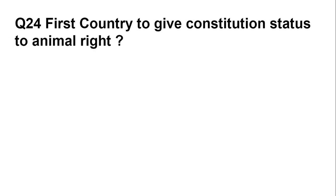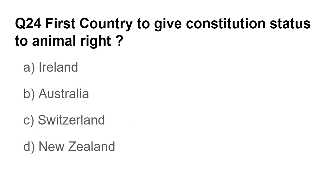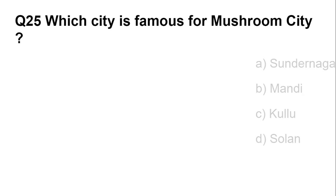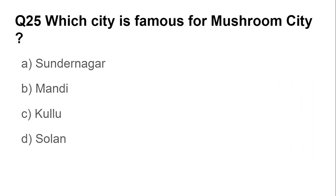Question number twenty-four: First country to give constitutional status to animal rights — Ireland, Australia, Switzerland, or New Zealand? The answer is Switzerland, which was the first country to grant constitutional rights to animals. Question number twenty-five: Which city is famous as the mushroom city? Options are: Sundernagar, Mandi, Kullu, and Solan. The answer is Solan.